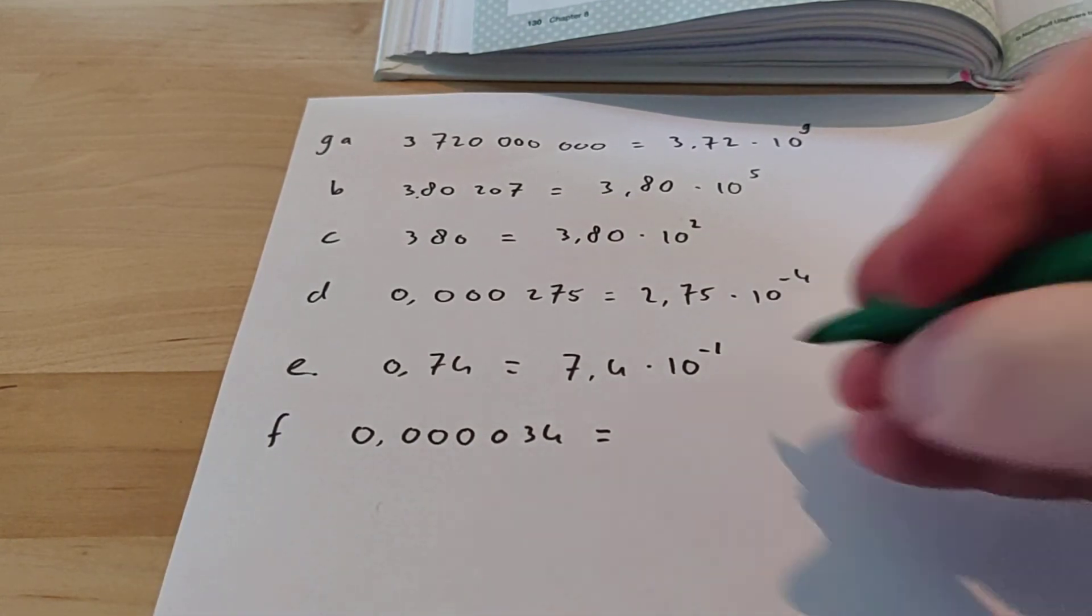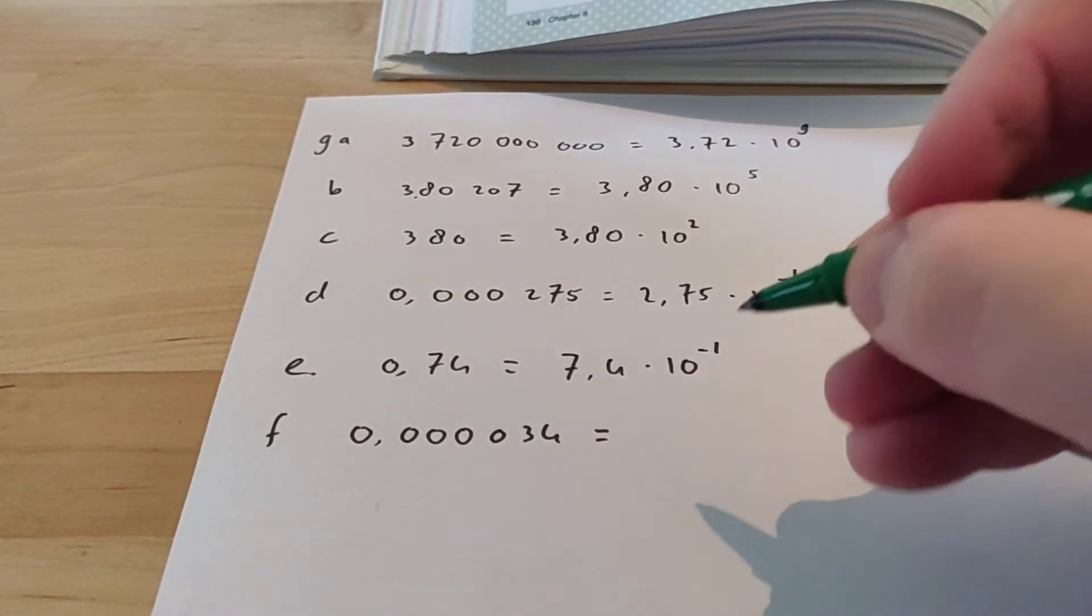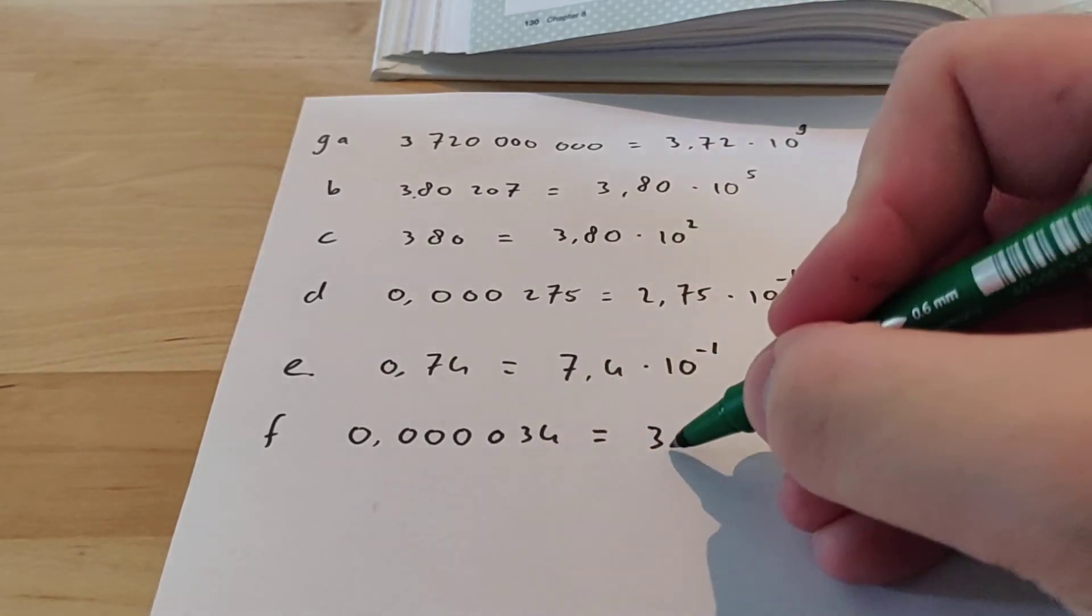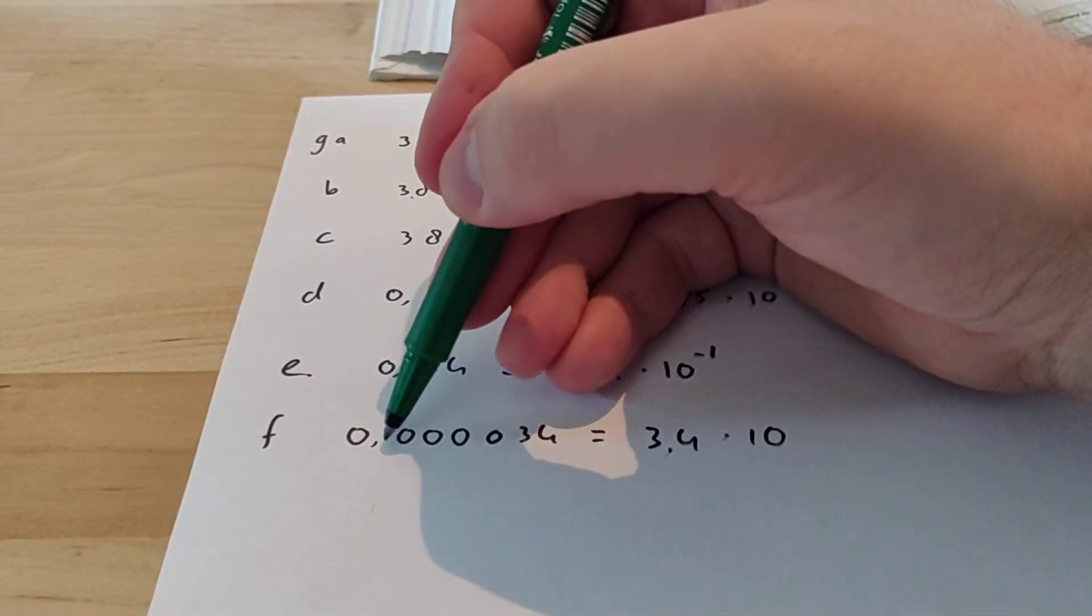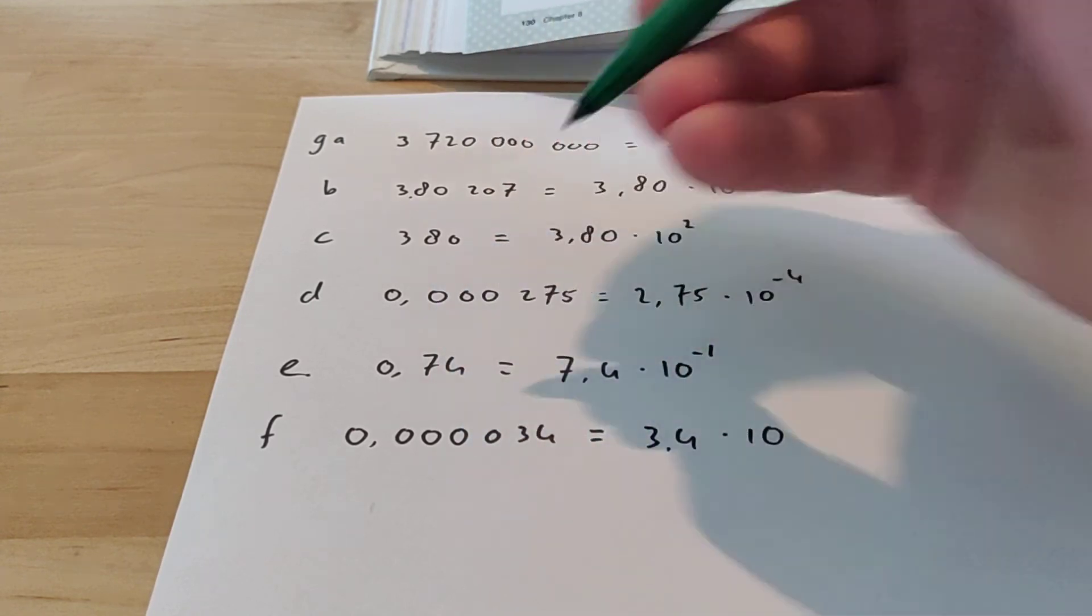And then for the last one. The first digit I see that's not 0 is 3. So 3.4 times 10 to the power of 1, 2, 3, 4, 5.